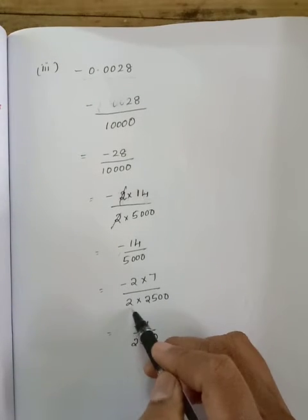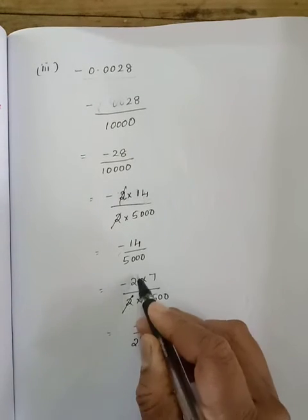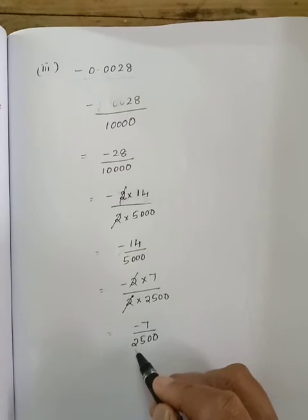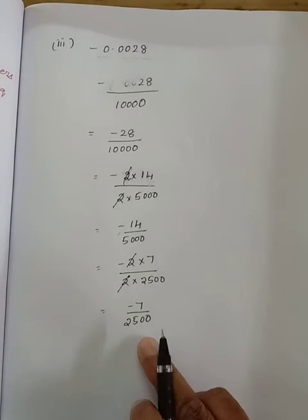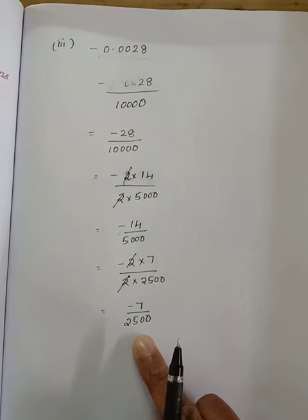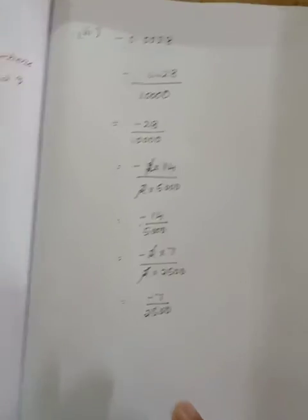Minus 2 into 7 divided by 2 into 2500. 2 and 2 get cancelled. Minus 7 by 2500. Now it is in the form of P by Q where Q value is not equal to 0. Thank you.